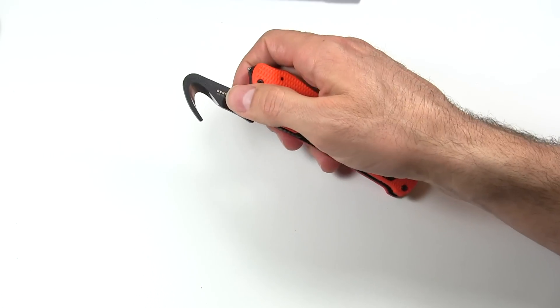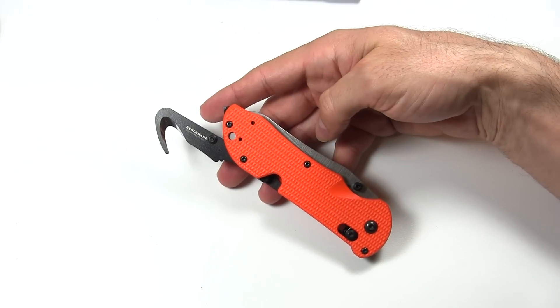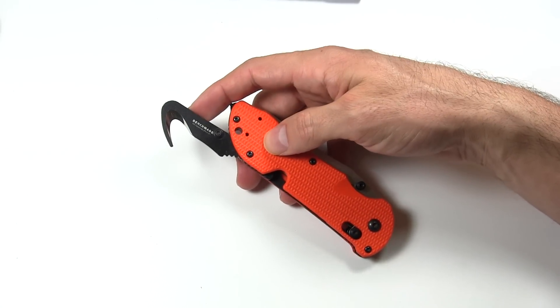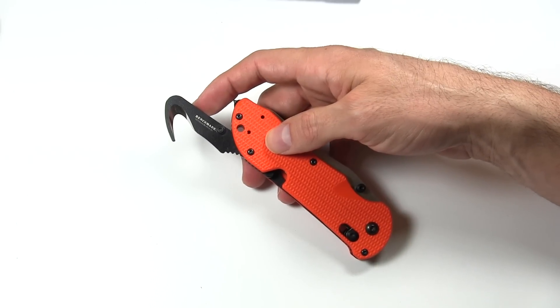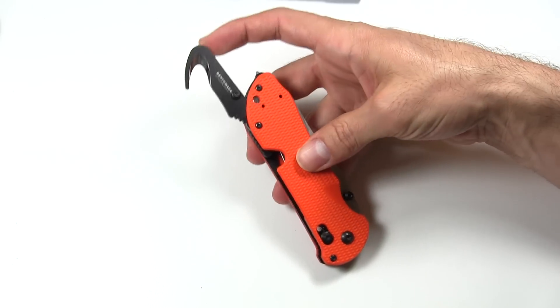And the steel on this, this is 440C. So a little bit lower grade steel than the N680. But you're probably not going to be using this quite as much. So it's probably not going to get quite as dull as the blade is likely to get.